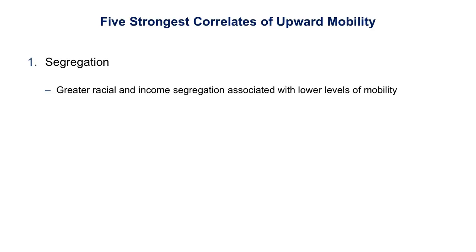Looking at many different factors, I'll summarize the five strongest correlates of upward mobility. The first turns out to be segregation. Places that are more segregated by race or by income tend to have significantly lower levels of upward mobility. The patterns here are so stark that it doesn't matter what statistical measure you use — you can see the results visually. This map depicts racial segregation in Atlanta, constructed by demographer Dustin Cable using census data where every person is represented by a dot: whites are blue, blacks are green, Asians are red, and Hispanics are orange.